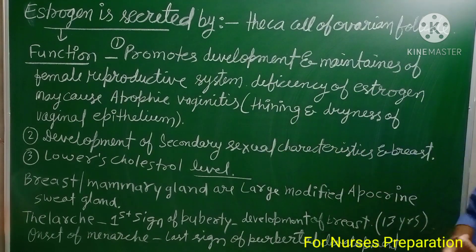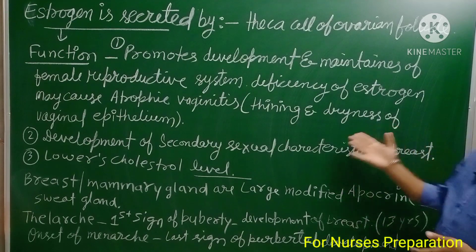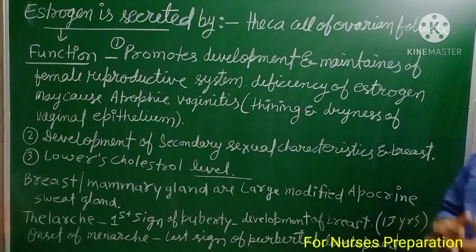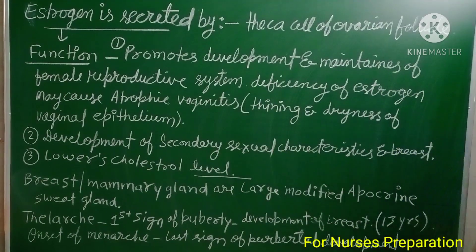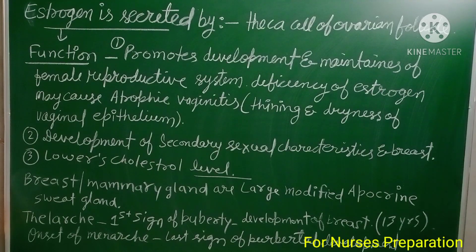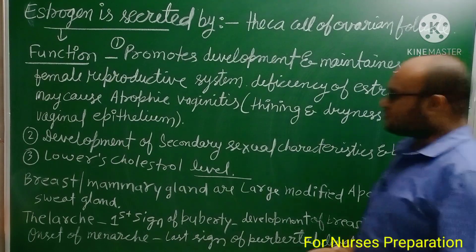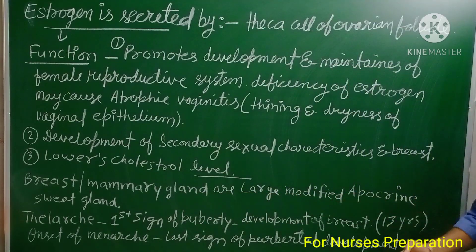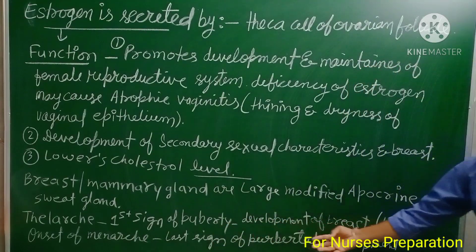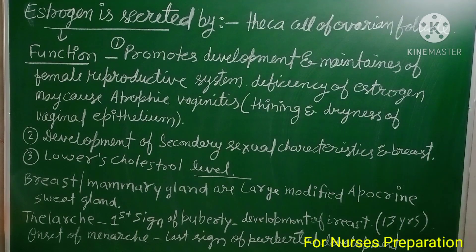In atrophic vaginitis, thinning and dryness of the vaginal epithelium occurs. Estrogen also aids in the development of secondary sexual characteristics and breasts, and it lowers cholesterol levels. The breast or mammary gland is a large modified apocrine sweat gland.